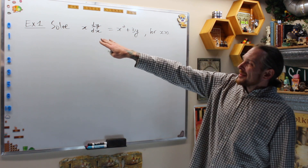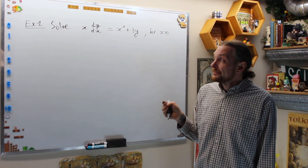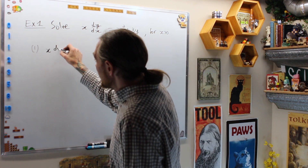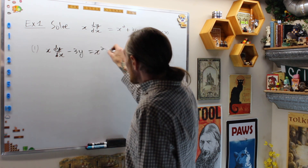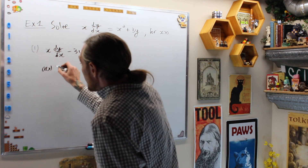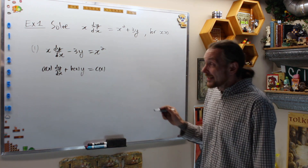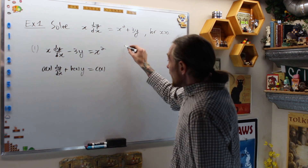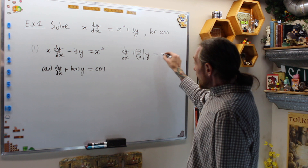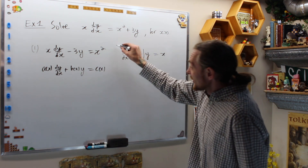Example 1: solve x dy/dx equals x squared plus 3y for x positive. Step 1, standard form. This is not in standard form, so first I write it as x dy/dx minus 3y equals x squared. We divide by a of x — that is, divide by x — to get the standard form: dy/dx plus negative 3 over x times y equals x. This is the standard form.